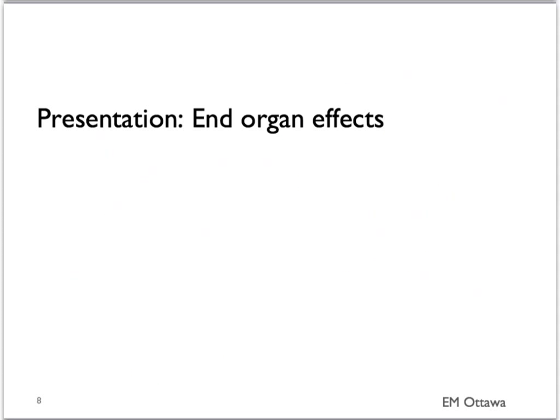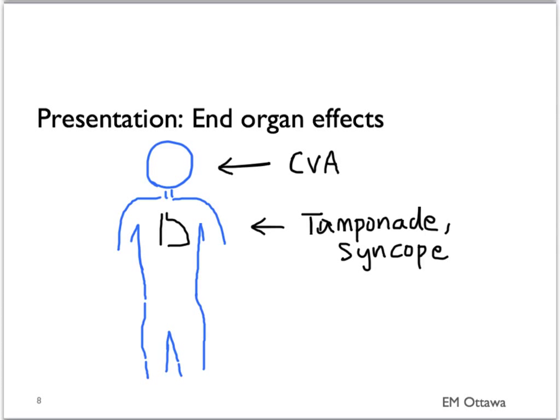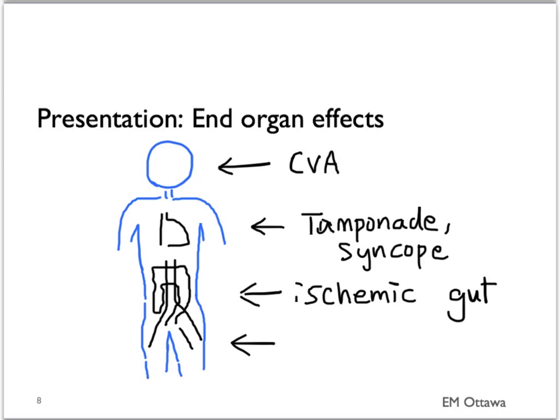In terms of the end organ effects, it is all based on which end organs are being affected. If the carotid arteries are being affected, the patient will present with a CVA. If the pericardium is affected, then the patient might present with syncope or tamponade. If the gut vessels are being affected, then the patient can present with ischemic gut. If the vessels like the iliacs are affected, the patient might present with ischemic limb symptoms.